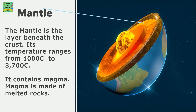Mantle. The mantle is the layer beneath the crust. Its temperature ranges from 1000 degrees Celsius to 3700 degrees Celsius. It contains magma, which is made up of melted rocks.